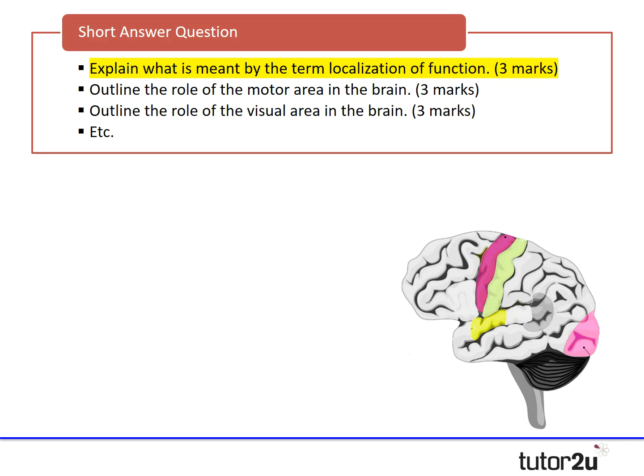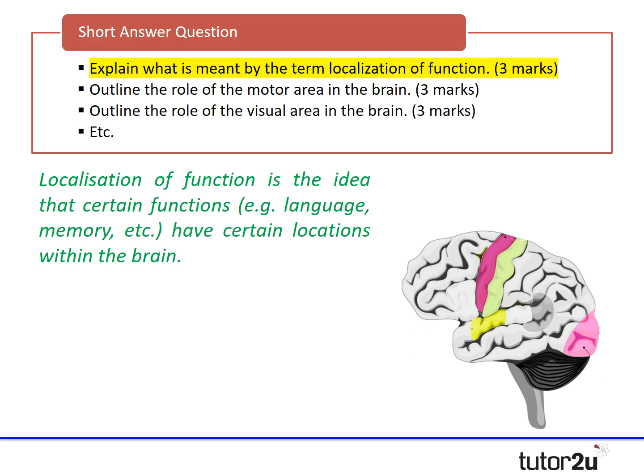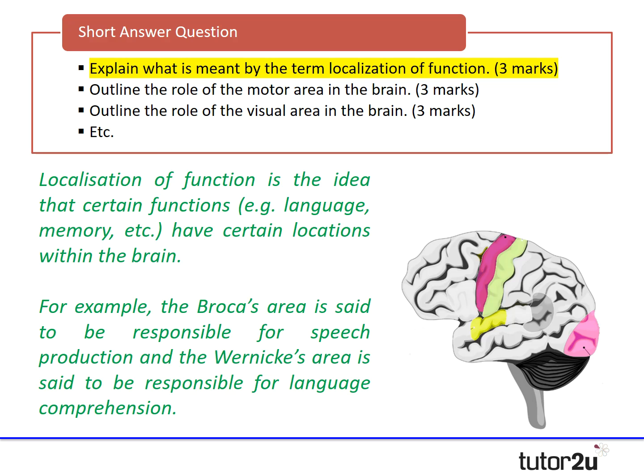Let's look at the short answer question: explain what's meant by the term localisation of function. Take note of the marks — it's three. Using the definition: localisation of function is the idea that certain functions, for example language and memory, have certain locations within the brain. We can see that isn't quite enough for three marks, so we elaborate — the Broca's area is responsible for speech production and the Wernicke's area is responsible for language comprehension. Adding those examples gains access to all marks available.